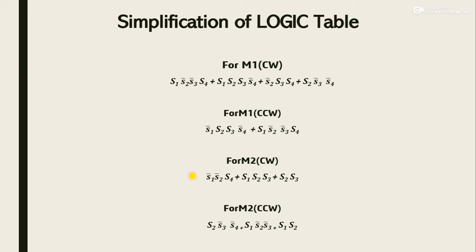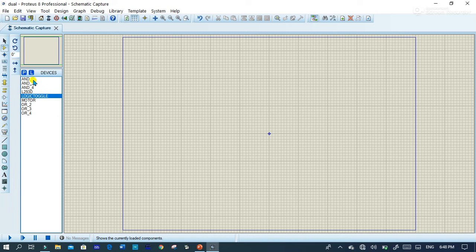According to this boolean expression I have made a circuit on Proteus and then check the results. Let's open your Proteus and we will need these items: AND gate with two inputs and with three inputs and with four inputs.